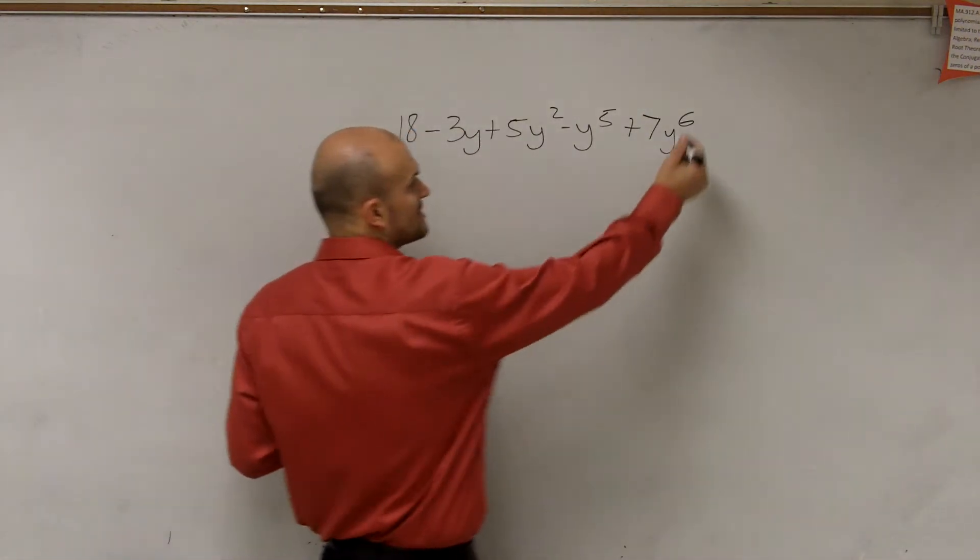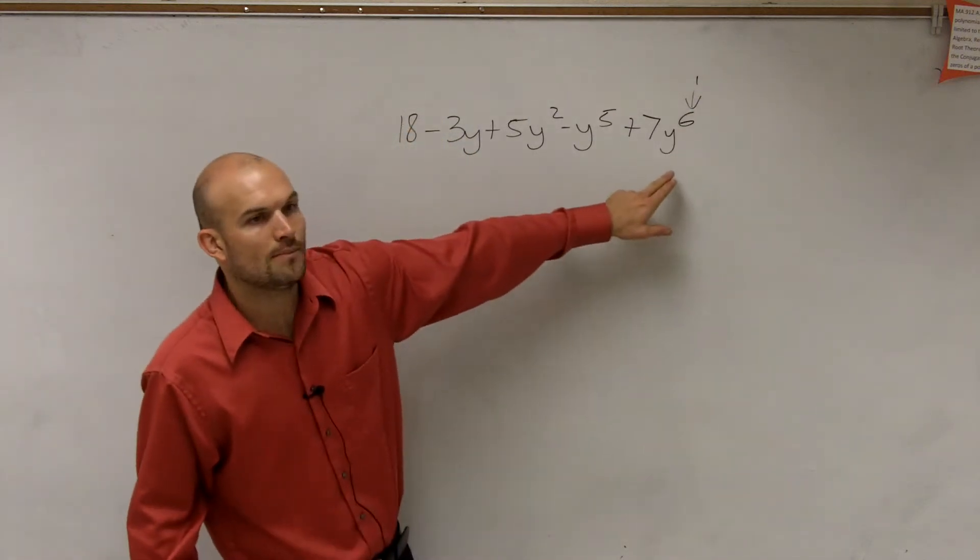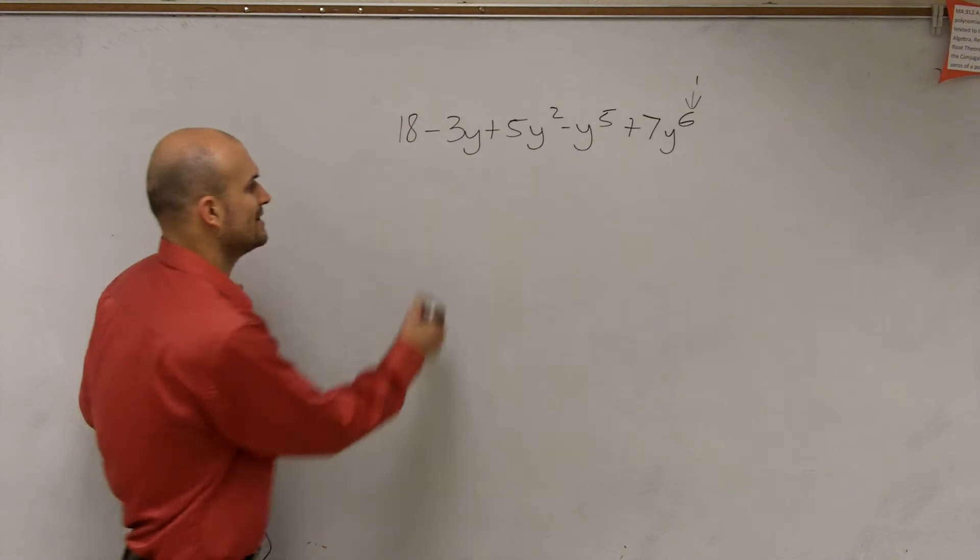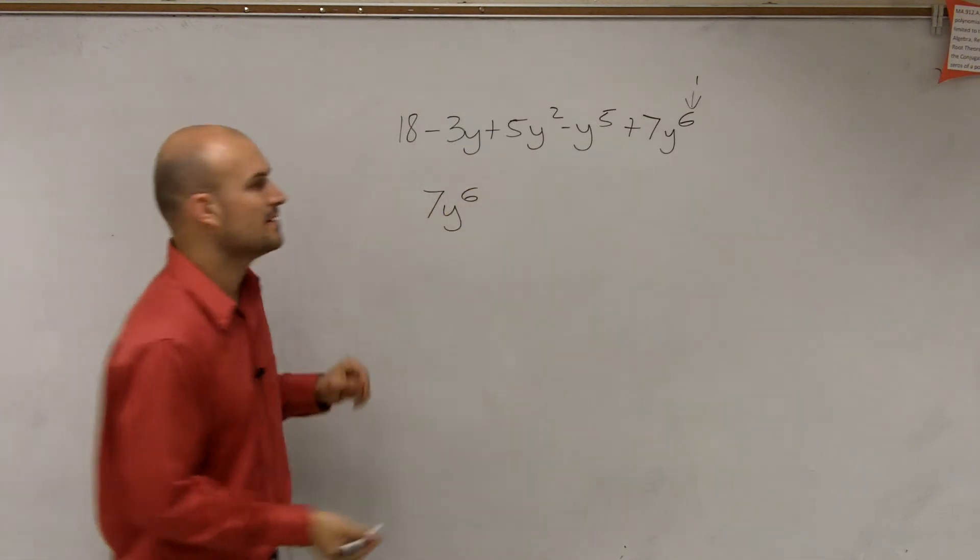So we look at our degree and we say, all right, the largest degree is right there, or 6. So we're going to take that whole monomial and write that first. So we have 7y to the sixth. Then the next one,